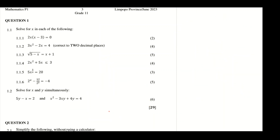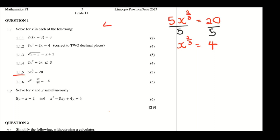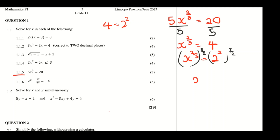Now for 1.1.5, we have 5x to the power of 2/5 equals 20. The first step is to divide both sides by 5, giving x to the power of 2/5 equals 4. We rewrite 4 as 2 squared, so x to the power of 2/5 equals 2 squared. Then multiply both sides by the exponent 5/2. We get x equals 2 to the power of (2 times 5/2), which simplifies to x equals 2 to the power of 5, so x equals 32.